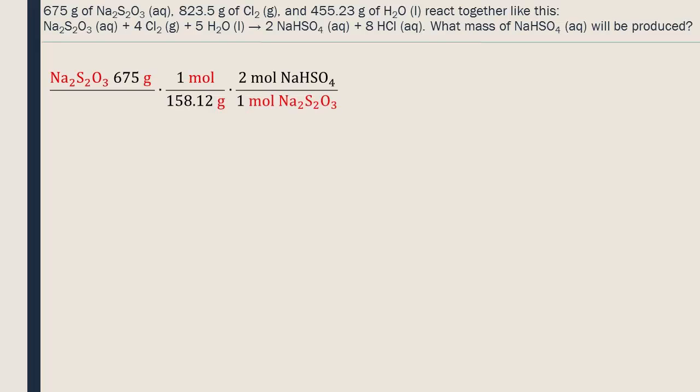For one mole of Na2S2O3, we will produce two moles of NaHSO4. To calculate the answer, multiply all the numbers in the numerator and then divide by each number in the denominator.